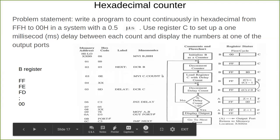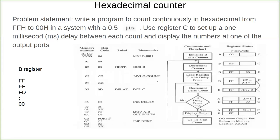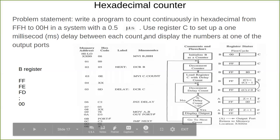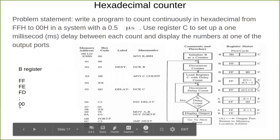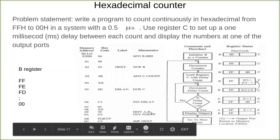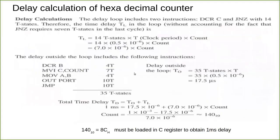The main problem is finding the count value that leads to exactly one millisecond delay. The hexadecimal counter counts from FF down to 00, and we have introduced a time delay so the output is visible for a few seconds — otherwise everything runs very fast and we can't see the output properly. Now we will see the delay calculations to find that count.